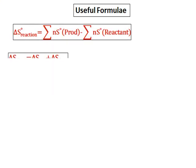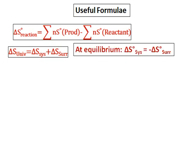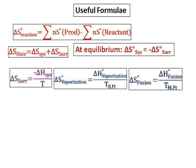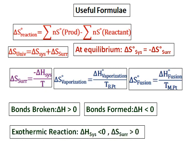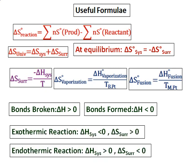Some useful formulae: delta S of the reaction equals sum of the entropy of the products minus the sum of the entropy of the reactants. Delta S universe equals delta S system plus delta S surrounding. At equilibrium, delta S system equals negative delta S surrounding. Delta S surrounding equals negative delta H system divided by T. Delta S0 vaporization equals delta H0 vaporization divided by the boiling point. Delta S0 fusion equals delta H0 fusion divided by the melting point.